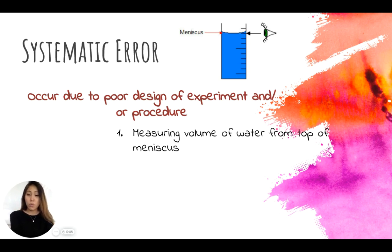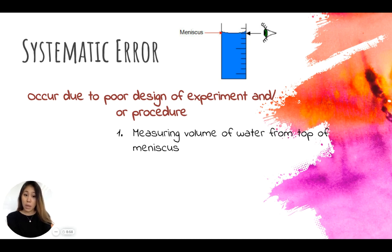If you only measured it that way for one trial out of ten trials, then that might be more of a random error than a systematic error.